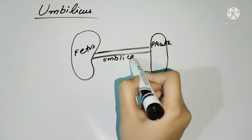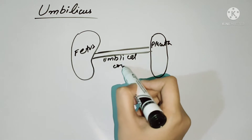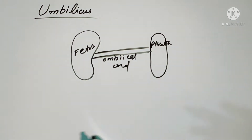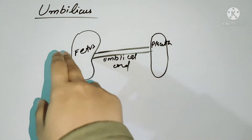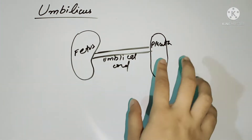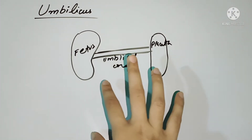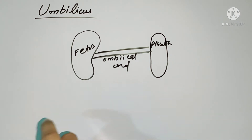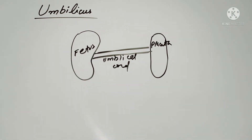What is the umbilicus? We provide nutrients to the fetus through the umbilicus, because the umbilicus is present in the placenta. The function of the placenta is to supply nutrients from the mother to the fetus.